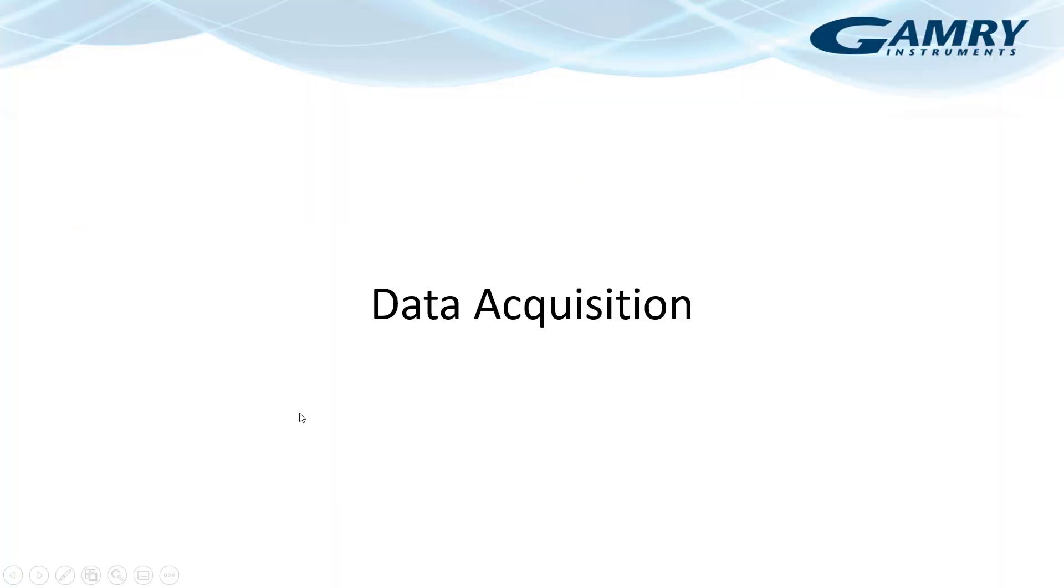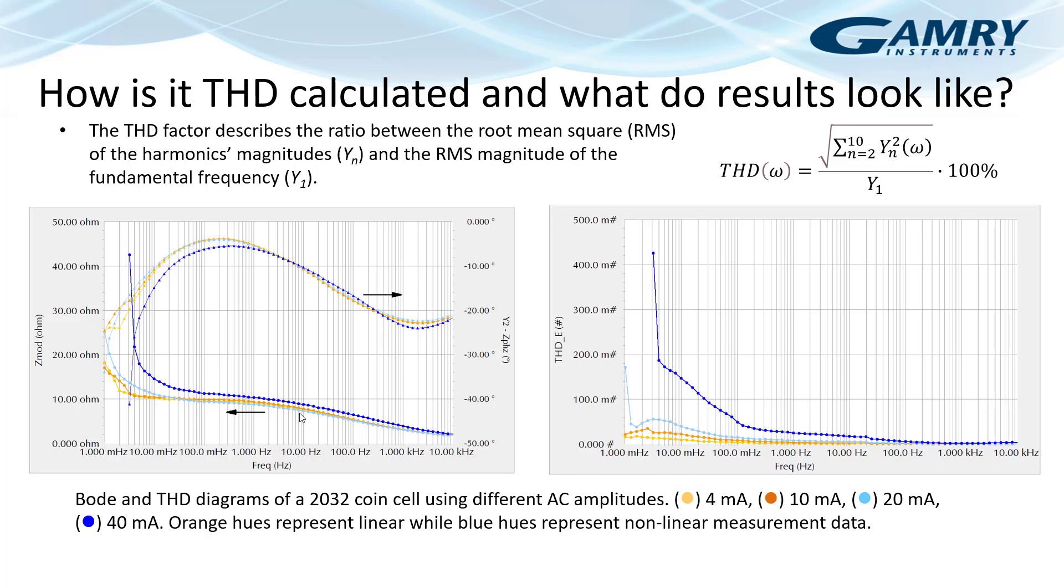So let's jump back to looking at some actual data. Since we're short on time, we don't want to run through a full data acquisition. I'll show you some data that was generated where we measured total harmonic distortion. And then you can see how these results would be presented. So these are impedance plots, Bode plots of 2032 coin cell that we measured at different AC amplitudes. You can see 4 milliamps, 10 milliamps, 20 and 40 milliamps. And in the Bode plot here on the left, we can see a rather nice response. For the gold hues, the gold and orange hues, those are typical linear responses that you would get. But as you can see, as you go to a higher amplitude and higher AC amplitude, you generate some non-linearity at these lower frequencies.